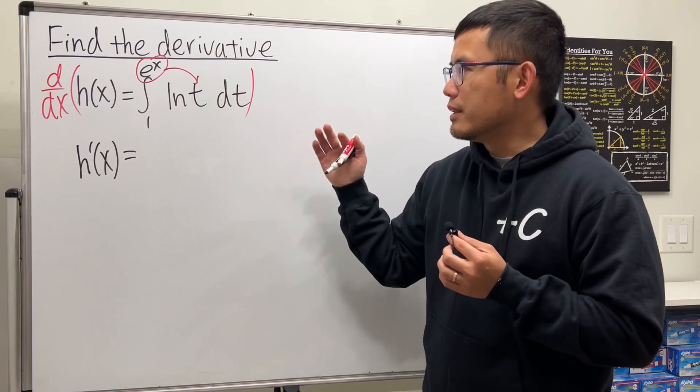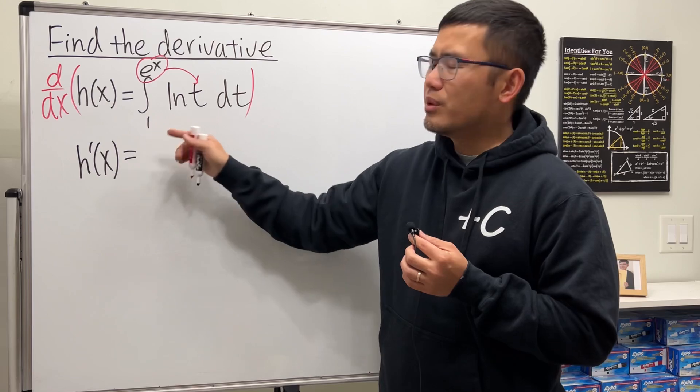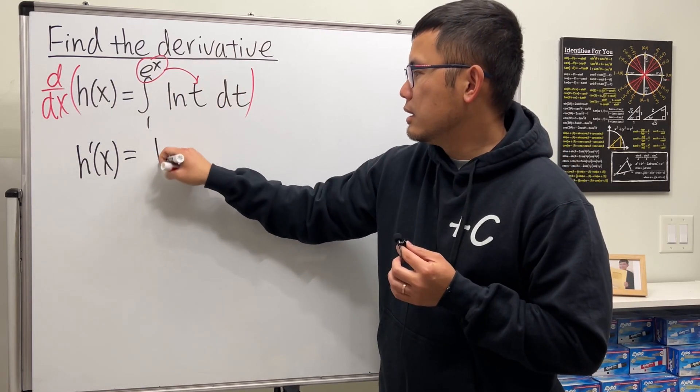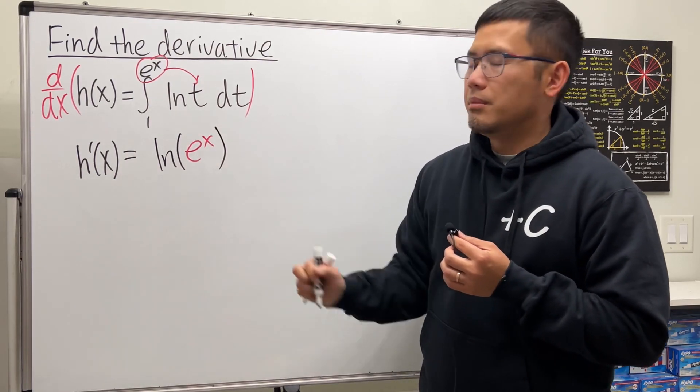Just go ahead and put that into the t. Integral and derivative cancel, and substitute this in here. And the number doesn't matter, so just do that, then you will have ln of e to the x.